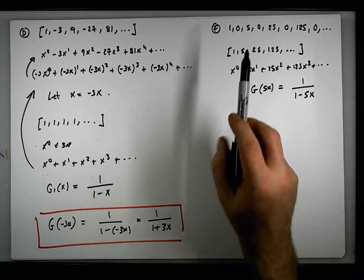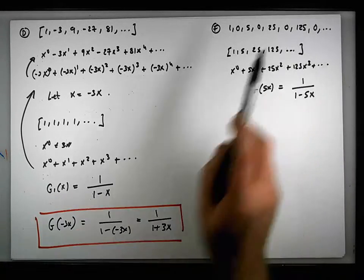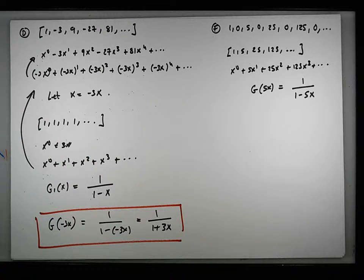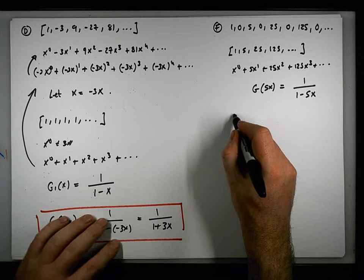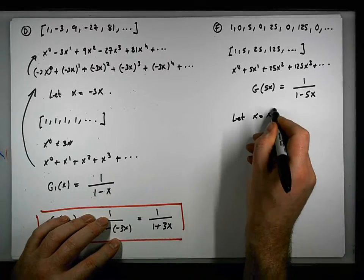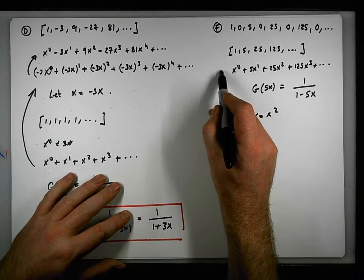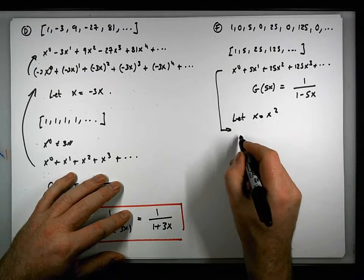What we want to do is introduce a zero between terms. We know how to introduce a single zero between terms because we looked at that earlier on. To introduce a single zero between terms, we substitute in x squared. So if we let x equal x squared in this particular sequence here...